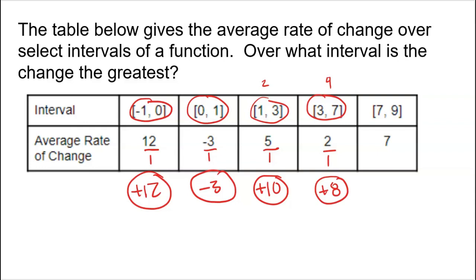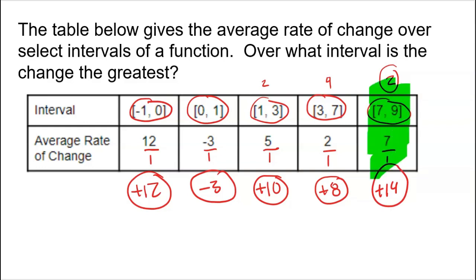The final interval is 7 to 9 — two units wide with an average of 7 per unit. That means a total change of 14. So the interval 7 to 9 has the greatest change of all five intervals, with a total change of 14.